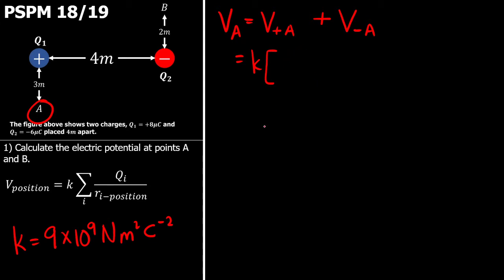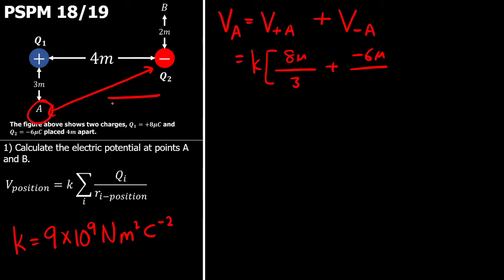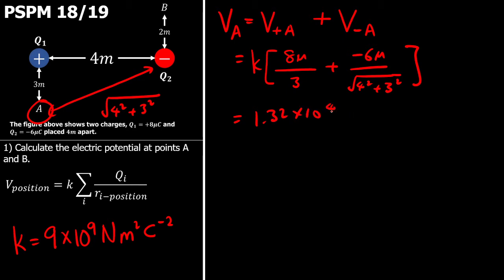Now we only worry about the charge and the distance between them. So the charge for Q1, the positive charge, is 8 microcoulombs, and the distance between A and the positive charge is 3 meters. And then the second one, I know it has a charge of negative 6 microcoulombs, and the distance between them is the hypotenuse, which has a length of square root of 4 squared plus 3 squared. Keying in all the numbers, what you will get is 1.32 times 10 to the power of 4 volts.